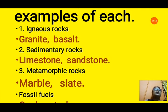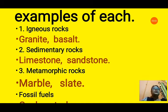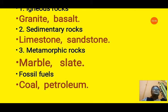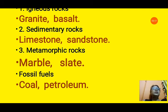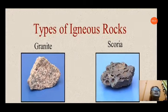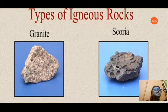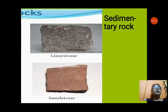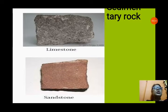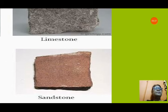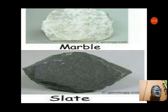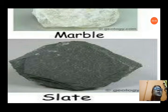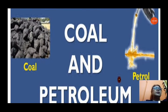Exercise D: Give two examples for each of the following. Igneous rocks: granite and basalt. Sedimentary rocks: limestone and sandstone. Metamorphic rocks: marble and slate. Fossil fuels: coal and petroleum. You can see granite and scoria (basalt) as examples of igneous rock, limestone and sandstone as examples of sedimentary rock, marble and slate as metamorphic rocks, and coal and petroleum as fossil fuels.